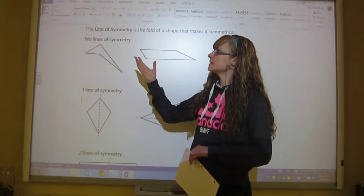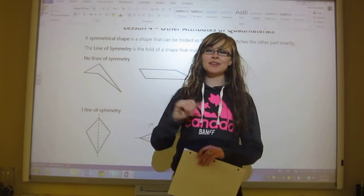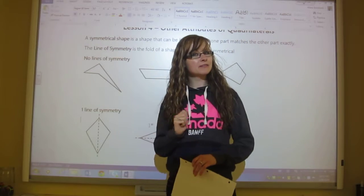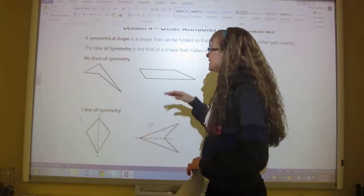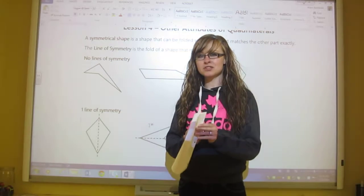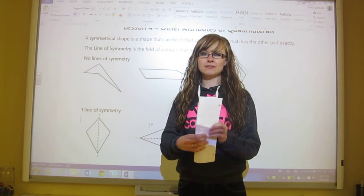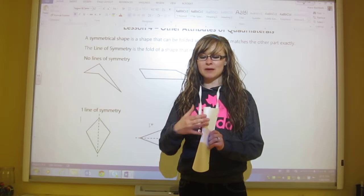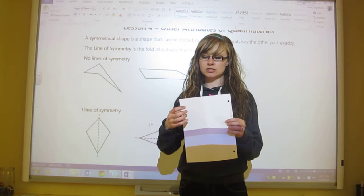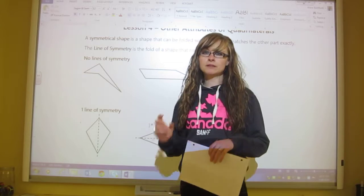So these are some examples of shapes that do not have symmetry. Oh, and before I go further I almost forgot to introduce you to a line of symmetry. You may have heard of it before, but the line of symmetry is basically the fold that you would make in the shape to make it symmetrical. So if this shape was symmetrical in this way, then the fold that I make would be the line of symmetry.